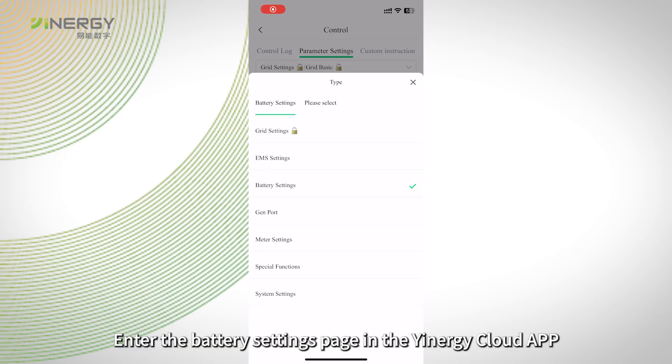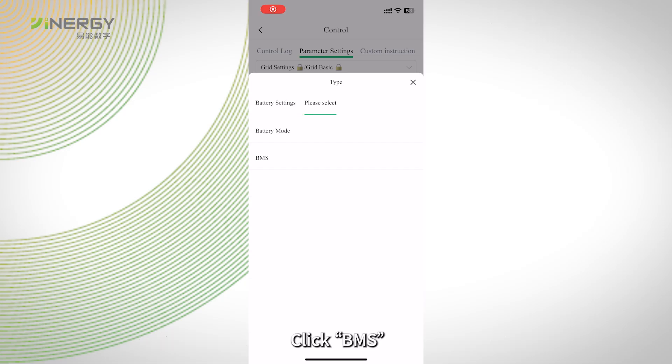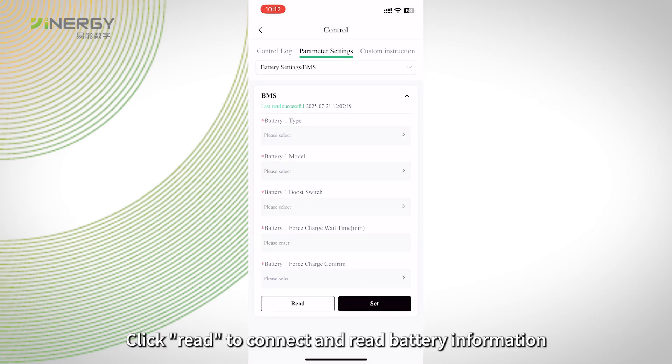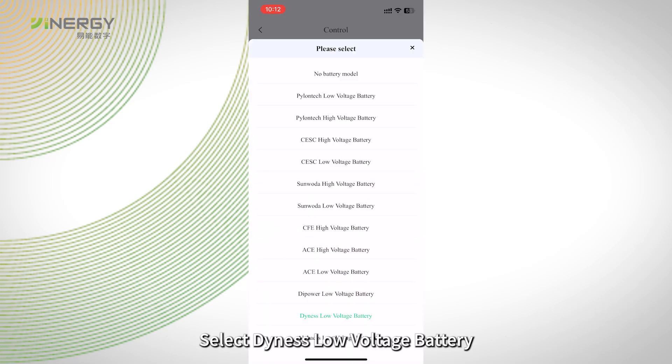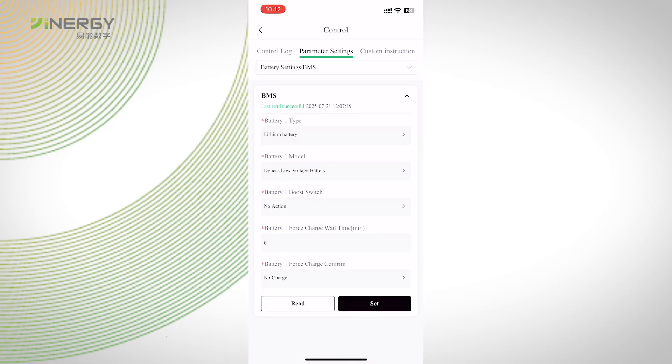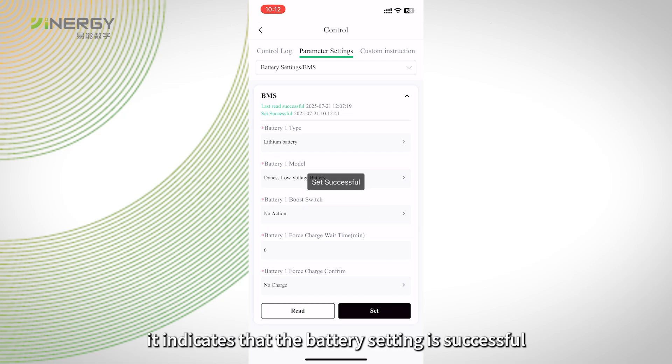Step 7: Enter the battery settings page in the Energy Cloud app. Click BMS, click Read to connect and read battery information. Select DIDA's low voltage battery. Click Set. Show Set Successful indicates that the battery setting is successful.